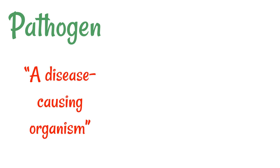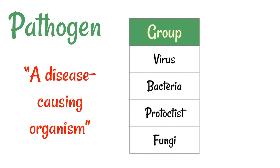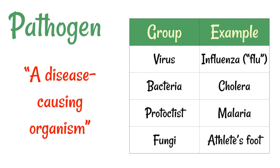A pathogen is just a fancy word for a disease-causing organism. There are a few different examples you should know: virus, bacteria, protoctus, and fungi. You should have an idea of an example of each one. Flu is one of the most famous examples of a virus. Cholera is an example of bacteria, as well as things like E. coli, which causes food poisoning. Malaria is a protoctus — that's the one people most easily forget — and fungi are things like athlete's foot.